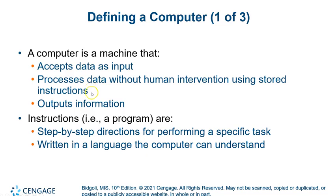Input, process, output — IPO — that's what a computer does: it processes the data without human intervention and then gives us some sort of information. Along the way we do other things like store and retrieve results, but basically input, process, output is what all computers can do.